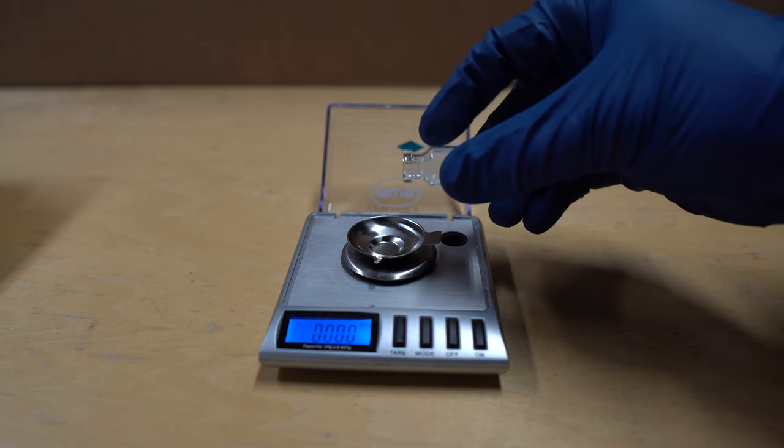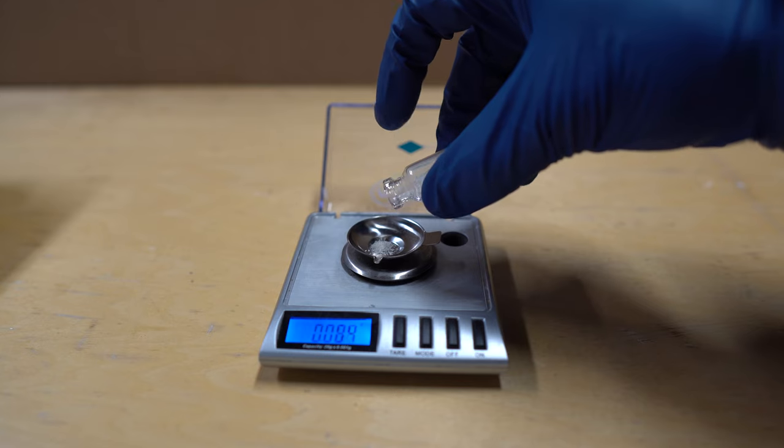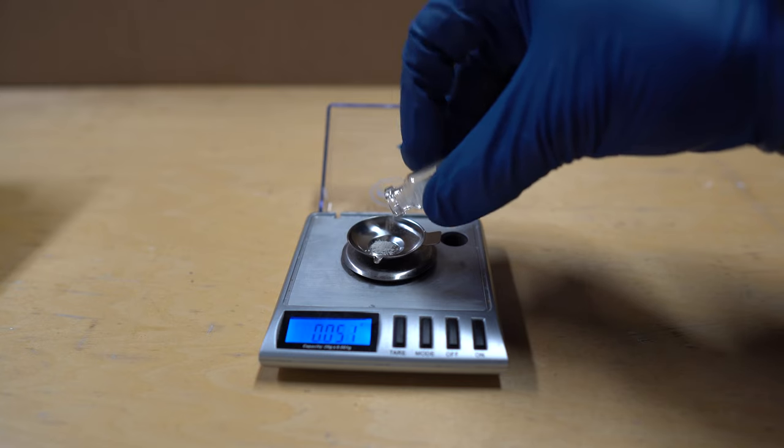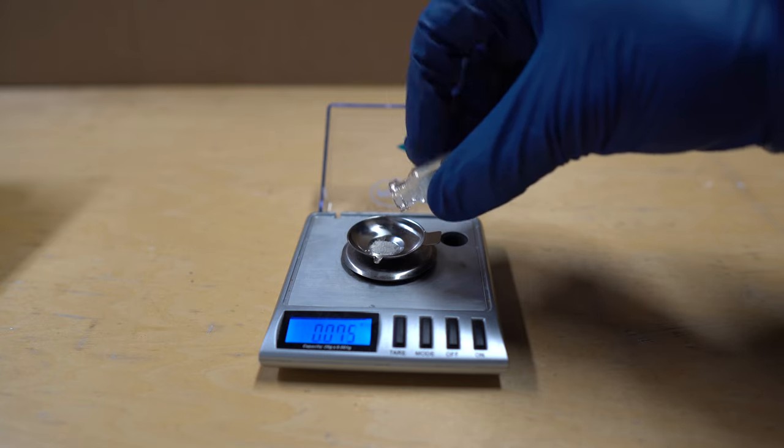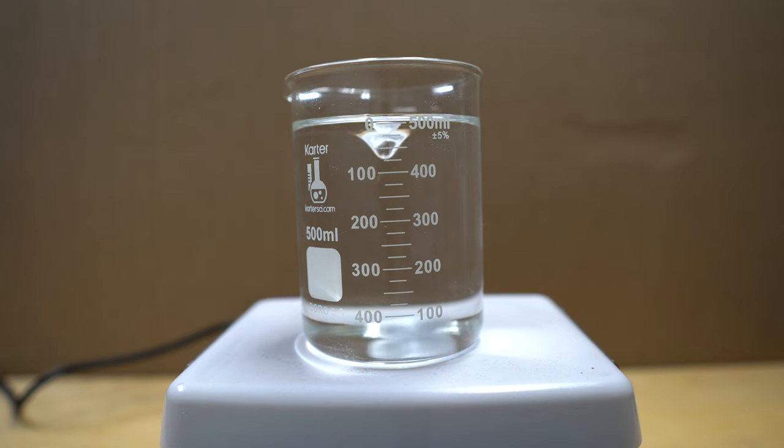So the next thing is we're going to weigh out about 0.1 grams of luminol. This is the only measurement I think I use in this entire thing until later in the video, which you'll see why. But we've got about 0.1 grams here. So now we're going to add that to the alkaline solution, and then we're just going to let it stir until it fully dissolves.